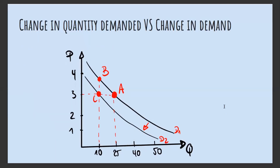It's very important to understand the difference between a change in quantity demanded and a change in demand. If you look at the graph, we have three points: A, B, and C. Points B and C represent the same quantity but at different prices. Going from A to B is a change in quantity demanded — the price goes from three to four and the quantity demanded becomes 10. We are moving along the same curve; a change in price causes a change in quantity demanded.